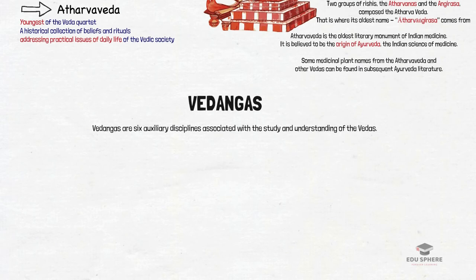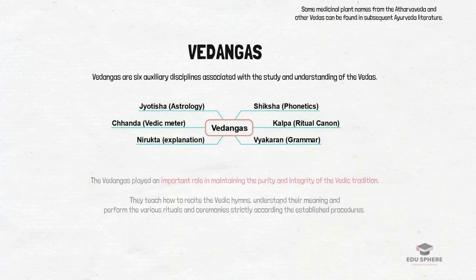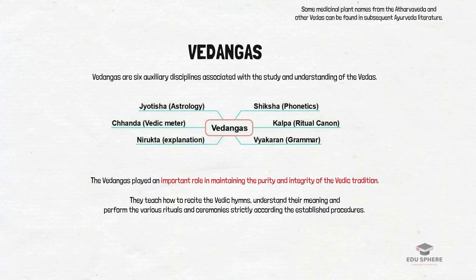Next we have Vedangas — six auxiliary disciplines associated with the study and understanding of the Vedas, serving as additional limbs or chapters. The six Vedangas are: Siksha and Chandas, which are aids for pronouncing and reciting Vedic mantras correctly; Vyakarana and Nirukta, for understanding their meaning; and Jyotisha and Kalpa, which provide appropriate times and methods for performing Vedic sacrificial rites. The Vedangas played an important role in maintaining the purity and integrity of the Vedic tradition, teaching students how to recite hymns, understand their meaning and perform rituals according to established procedures.